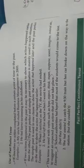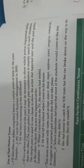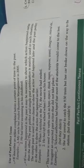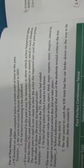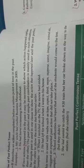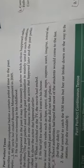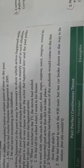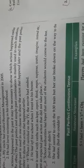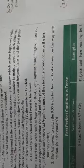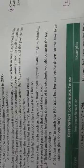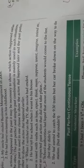If two actions happened in the past, it may be necessary to show which action happened earlier than the other. The past perfect and simple past combination is mainly used in such situations. The simple past is used in one clause to show the action that happened later, and the past perfect in the other to show the action that happened earlier.